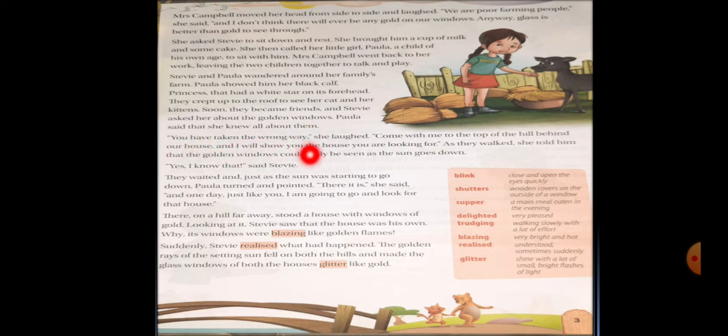"You have taken the wrong way," she laughed. "Come with me to the top of the hill behind our house and I will show you the house you are looking for." When they both were going that side, Paula told him that you are going the wrong way. That side there were no golden windows. I know the exact place where the golden windows were.